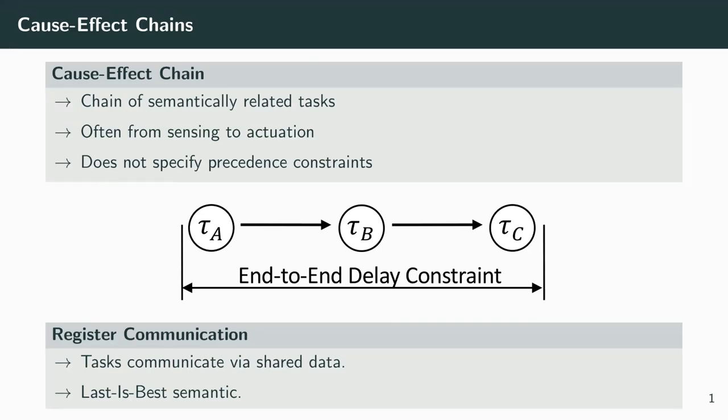Cause-effect chains are a typical pattern in real world applications. Several software tasks jointly fulfill functionality but are specified independently without precedence constraints. Communication between tasks is done by register communication where producers write to shared memory and consumers read from there. As no explicit synchronization is established, a last-best semantic is employed for the messages. This approach simplifies specification and distributed development, as in the concurrent engineering paradigm.